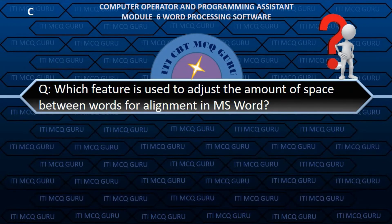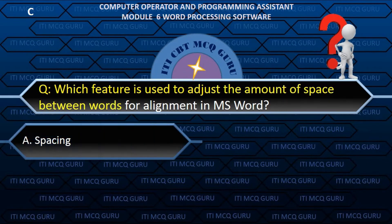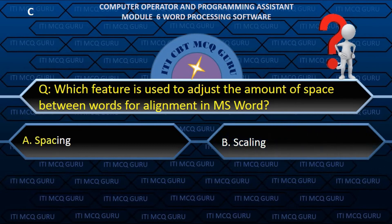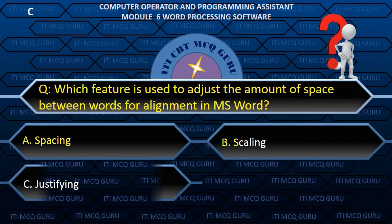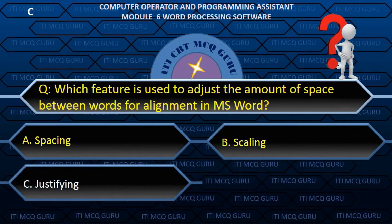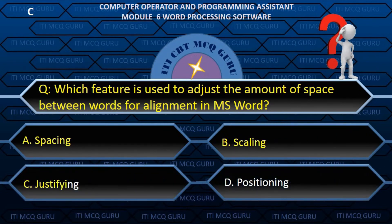Which feature is used to adjust the amount of space between words for alignment in MS Word? C. Justifying.